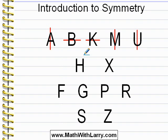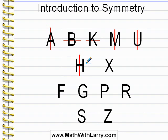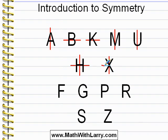Now take a look at these letters in the next row. The H and the X each have two lines of symmetry. I can draw a vertical line of symmetry, and it's easy to see that the left half is the mirror image of the right half. But I can also draw a horizontal line, and we can see that the top half is the mirror image of the bottom. We can do the exact same thing with the X — it has vertical line symmetry and horizontal line symmetry.